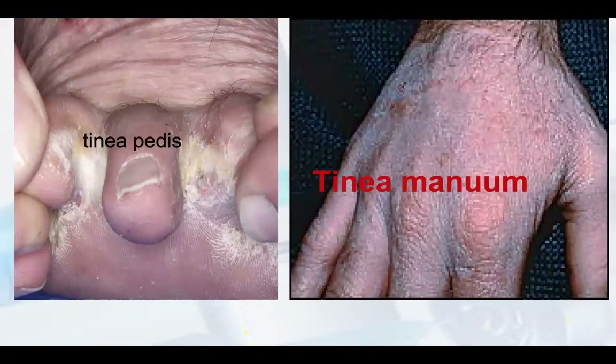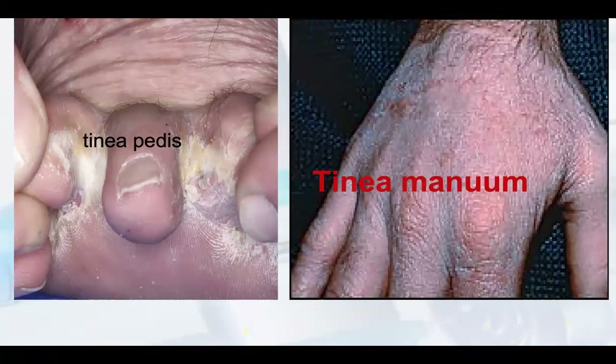You can see tinea of the nails on the left side and tinea manuum on the right side — these are different types of fungal infections.